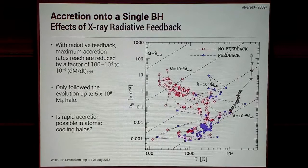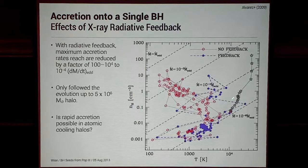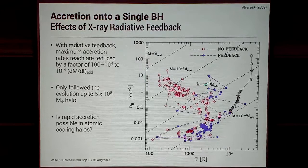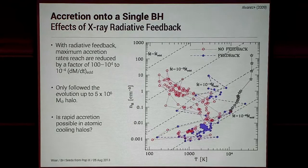Why is this decreasing? We show the evolution of where the black hole is in density and temperature space, which regulates the Bondi accretion rate. With feedback, the locus of points is right around a millionth of the Eddington ratio. Without feedback, it's around 10^-2 of Eddington. So in these mini-halos, you effectively decrease the accretion rates by a factor of 100 to 10,000. A big caveat is we only followed this evolution for 200 million years in a halo that grew to just 5 million solar masses — still a small halo.